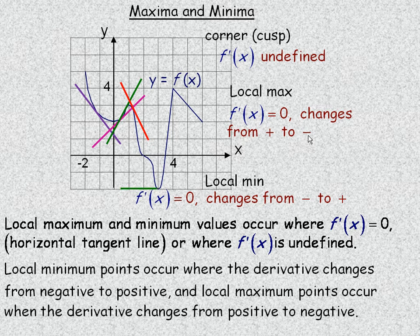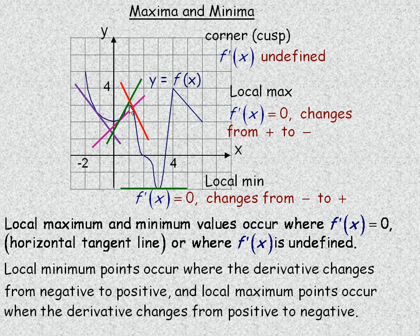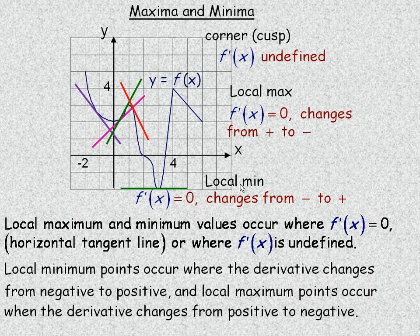For any of these local minimum and local maximum points, if you draw a tangent line at the local min or max, notice that it's completely horizontal. So not only is the derivative changing from negative to positive at a minimum point, but at the actual local minimum point, the derivative's value is zero — because there would be a horizontal tangent line. The same is true for the local maximum point: the tangent line would be horizontal, so the derivative would be zero.